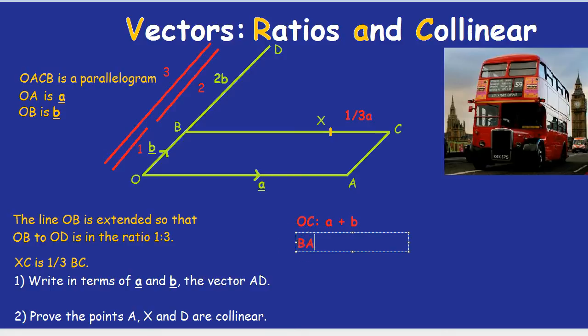What about BA? BA is a brilliant airline, but no. BA, the vector, would be, how do we get there? We could go across and down. I would prefer maybe to go down and across. Going down, we go against the arrow. So is it going to be the vector b? It will be the vector minus b. When you go opposite to the arrow, don't forget a minus. So BO is minus b, and OA is positive a, so plus a.